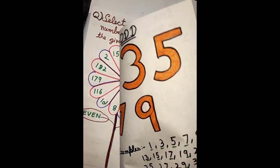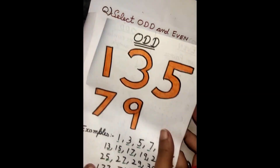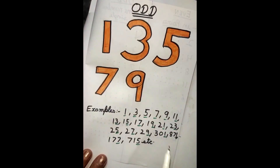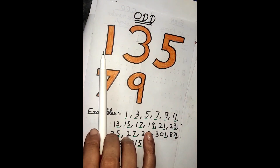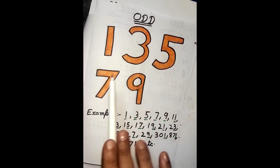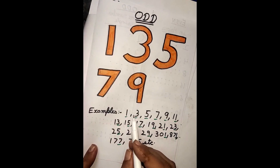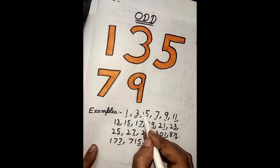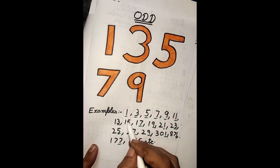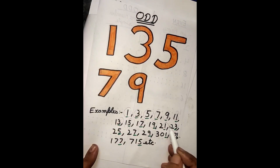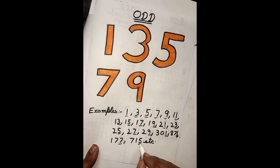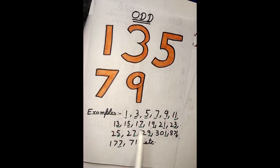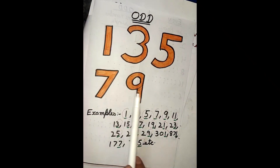Now we can move to our next page — the odd numbers chart. As I told you first, we should have 1, 3, 5, 7, or 9 on the ones place. So here I have 1, 3, 5, 7, 9 repeating across the chart. As we have 1, 3, 5, 7, or 9 on the ones place, all these are odd numbers.